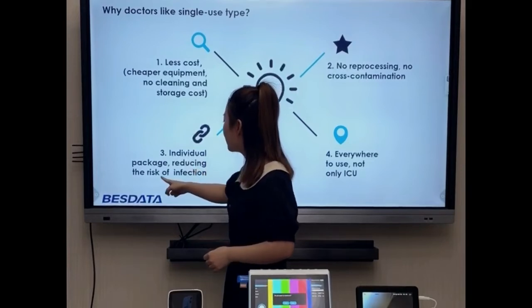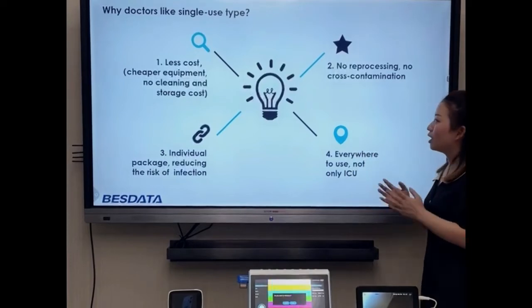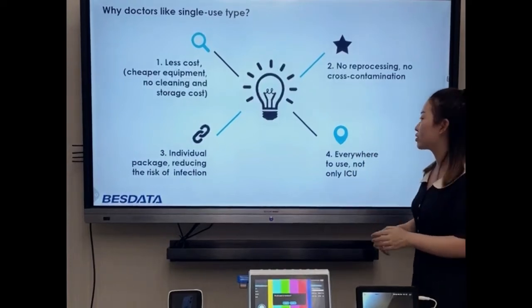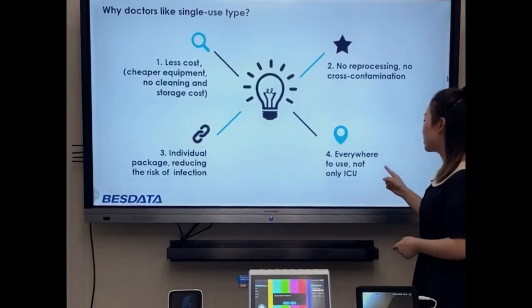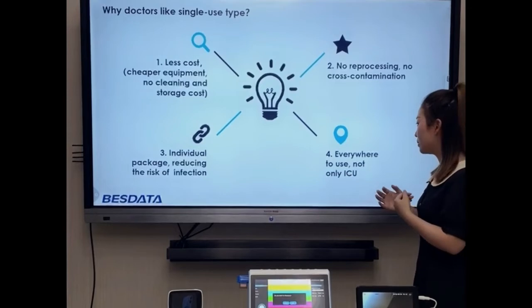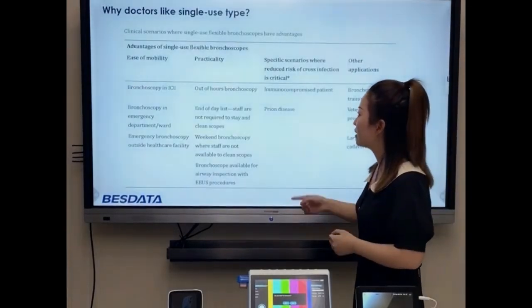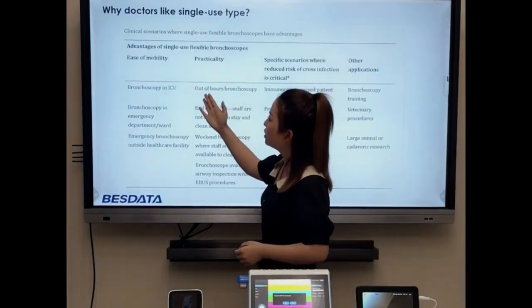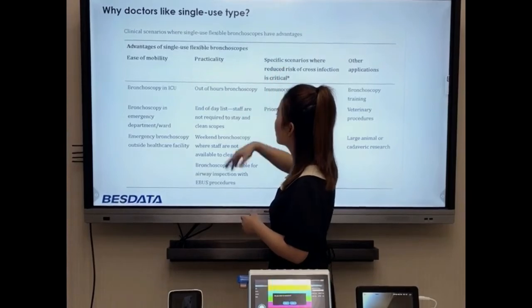And the third point is individual package. It can reduce the risk of infection. And the fourth point is single-use bronchoscope because it's much more portable. So, it can be used not only in ICU. It can be used in more places everywhere. And next, it shows the advantages of single-use flexible bronchoscopes.